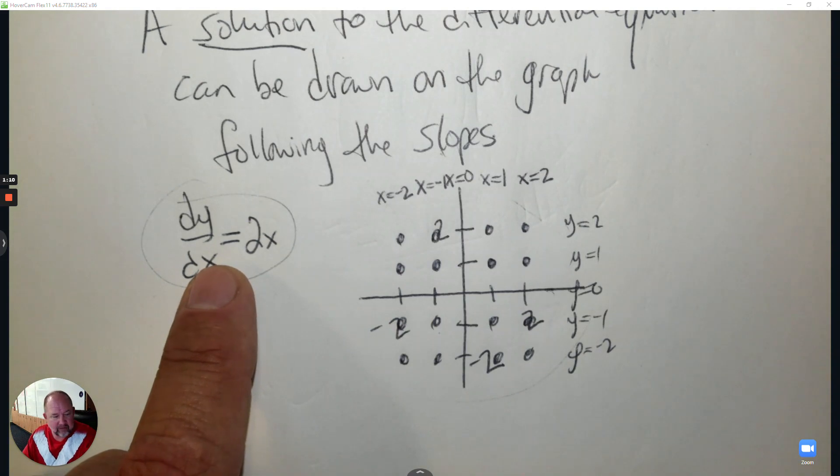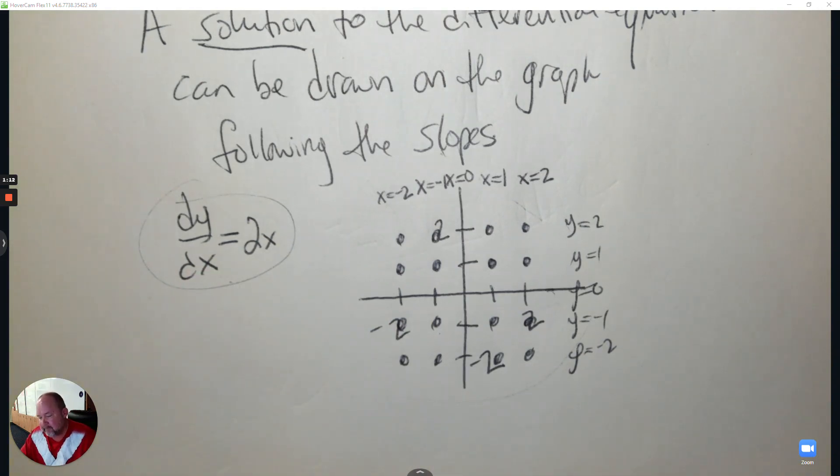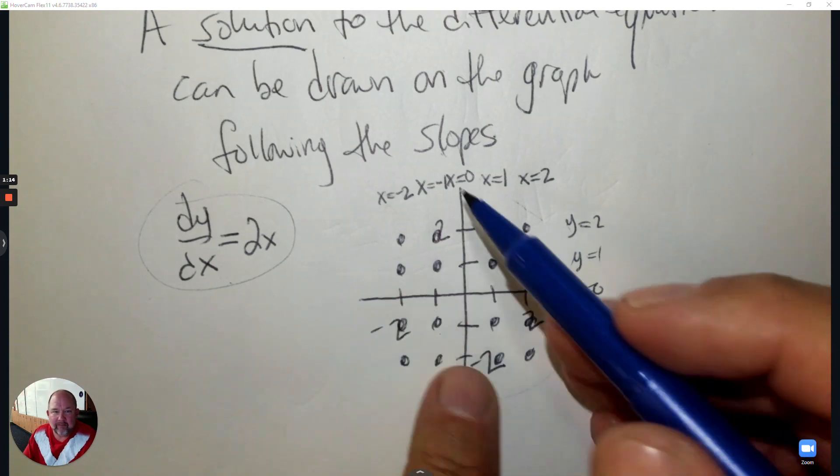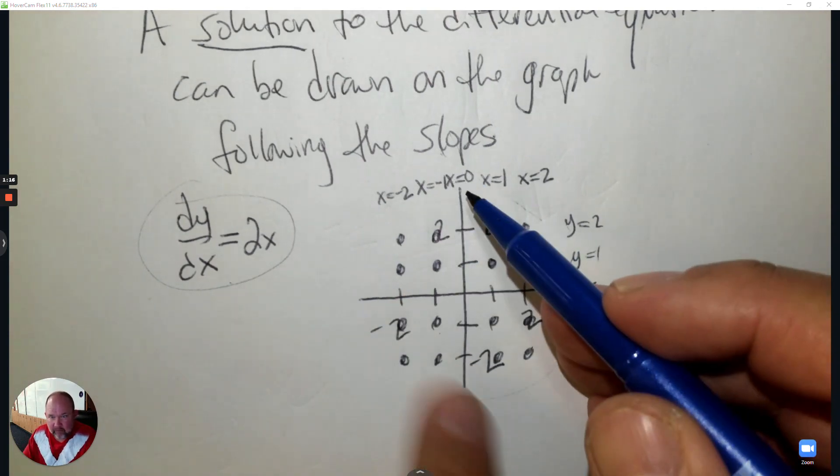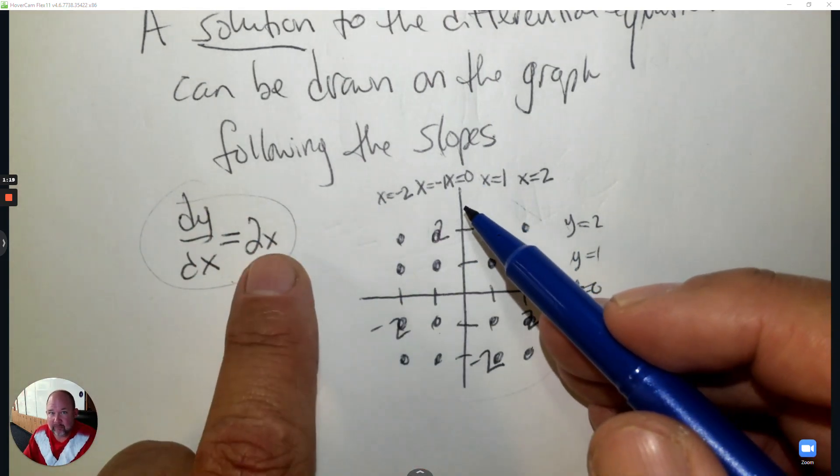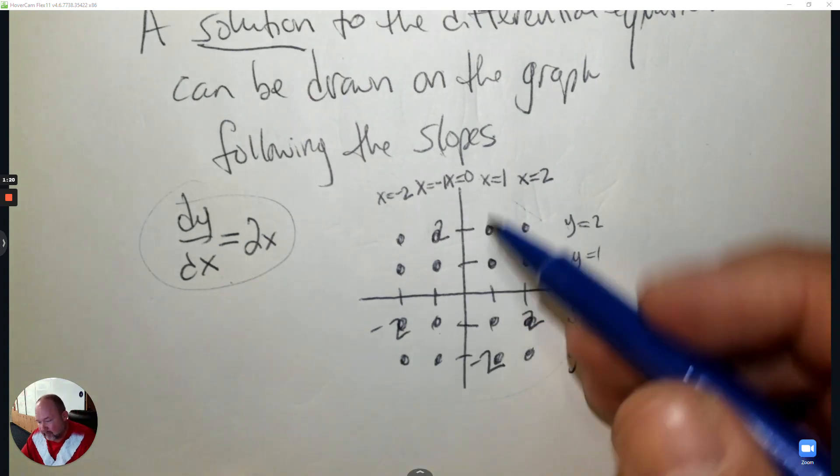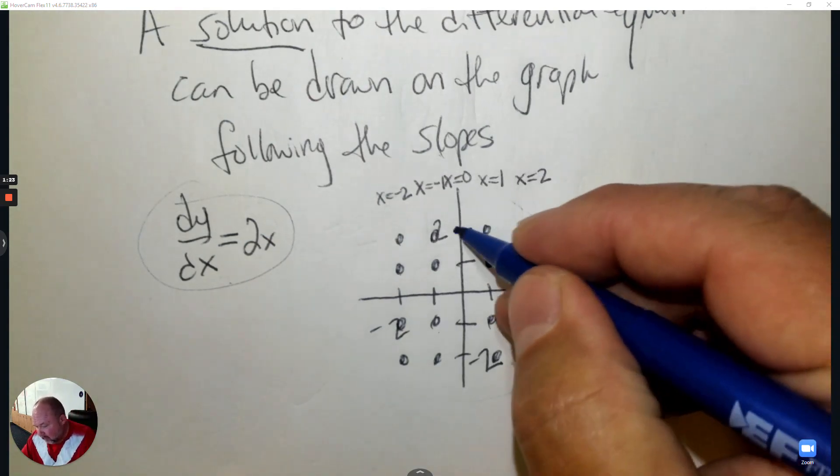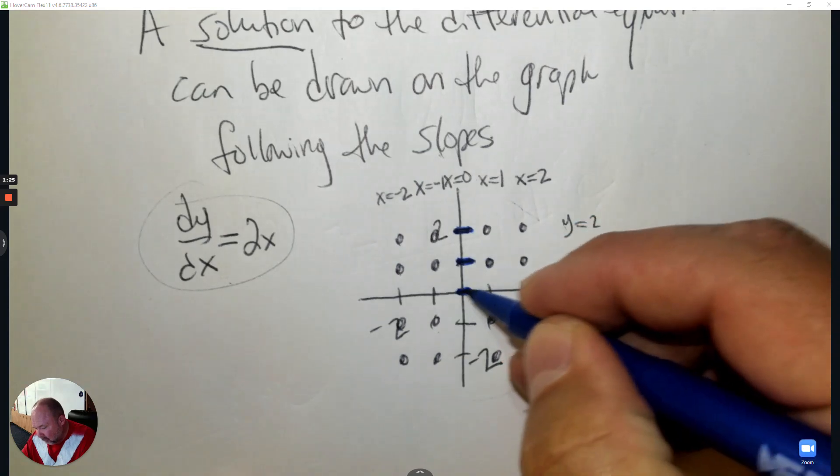I'm going to change the color here to blue. If I start in the middle at 0, if I plug in 0 for x, 2 times 0 is 0. So every single point here where x is 0, the slope is 0, which is a horizontal line.